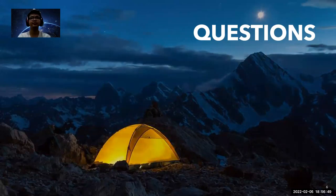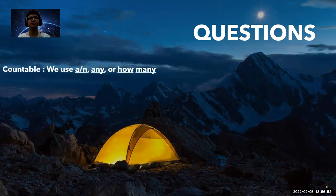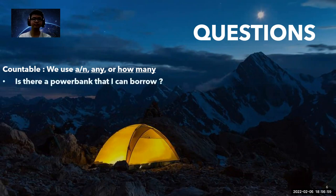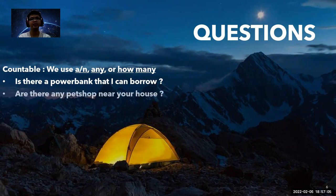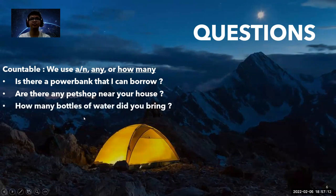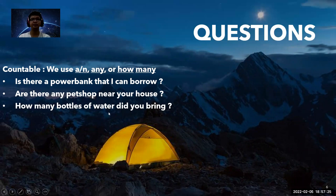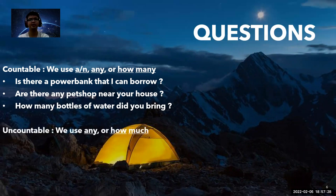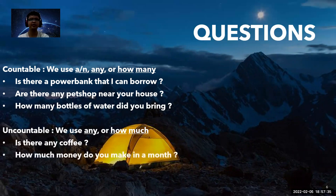For questions: when asking about countable nouns, we use 'a,' 'an,' 'any,' or 'how many.' For example: 'Is there any bank I can borrow from?' or 'Are there any buses near your house?' We can count both of these. 'How many bottles of water did you bring?' — we can count the bottles. For uncountable nouns, we use 'any' or 'how much.' For example: 'Is there any coffee?' or 'How much money do you make in a month?'